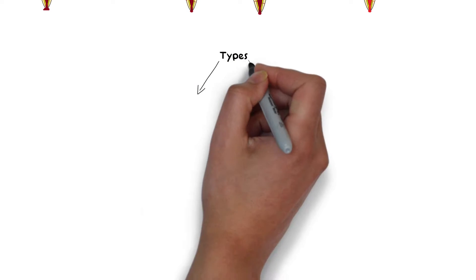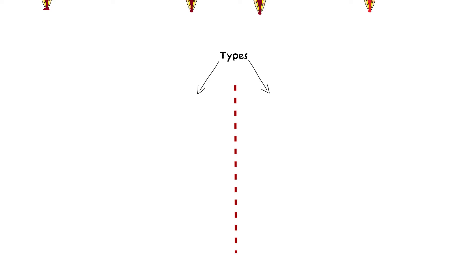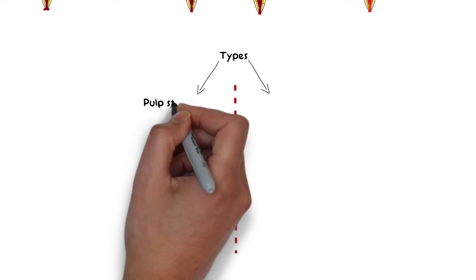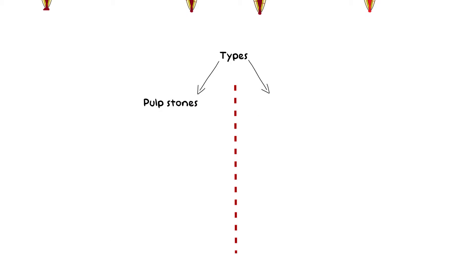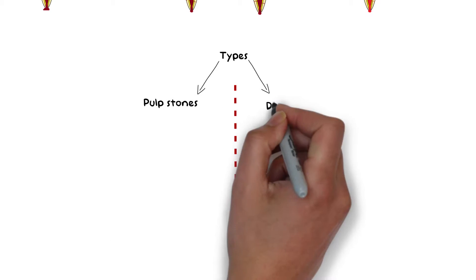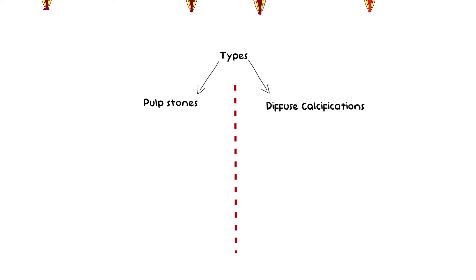There are two basic forms of pulp calcifications: pulpal stones, also known as denticles, and diffuse calcifications. There is yet another form of calcification which I will discuss later on in this video because it requires separate attention.